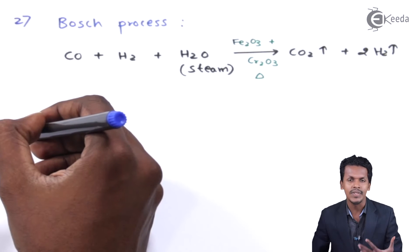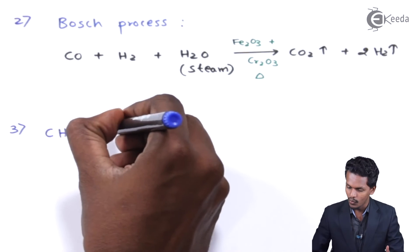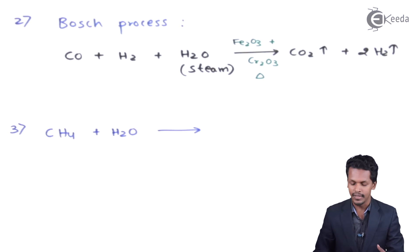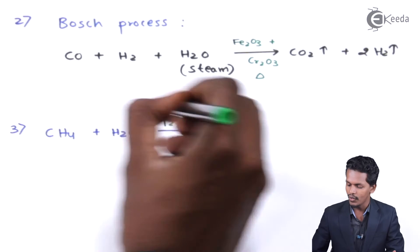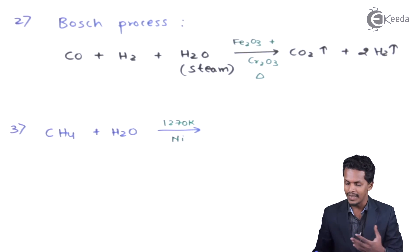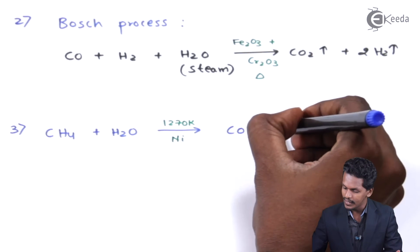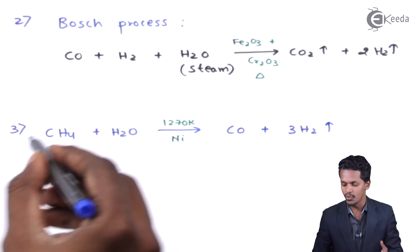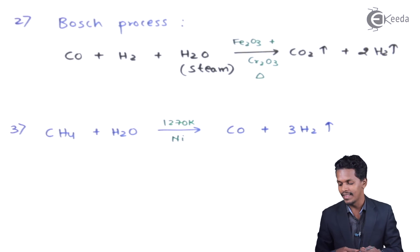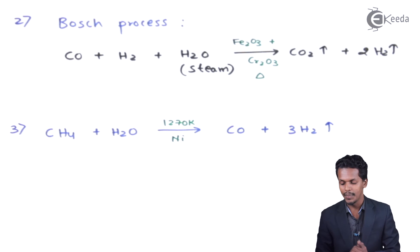The next method involves treating methane (CH₄) with water (steam reforming). Nickel acts as a catalyst at a temperature of 1270 Kelvin. The carbon in CH₄ is oxidized to carbon monoxide, and three moles of H₂ are produced. This is the hydrolysis of methane in the presence of nickel as a catalyst, yielding carbon monoxide and the main desired product — hydrogen gas.